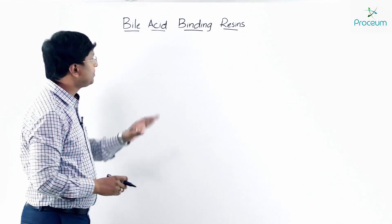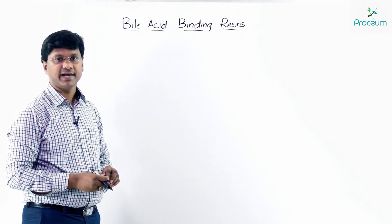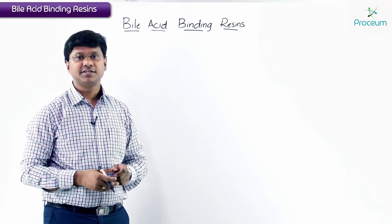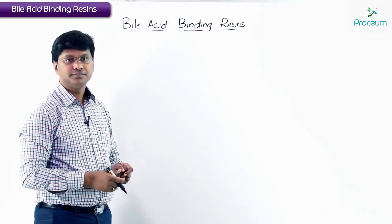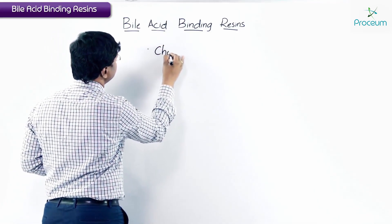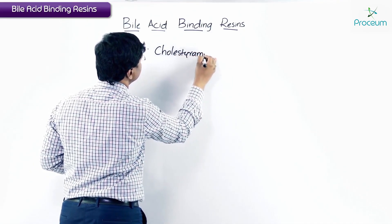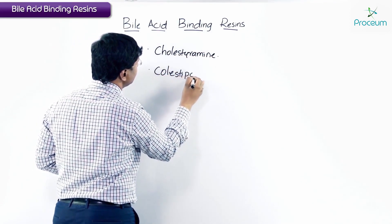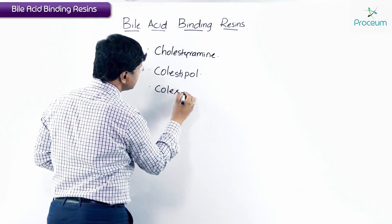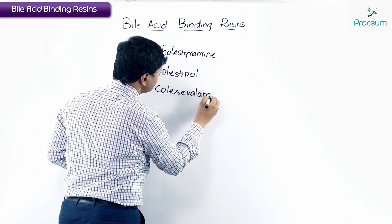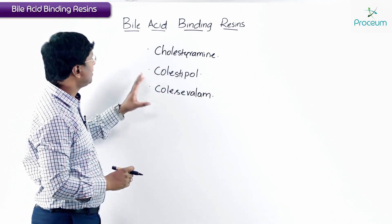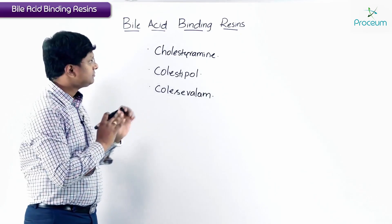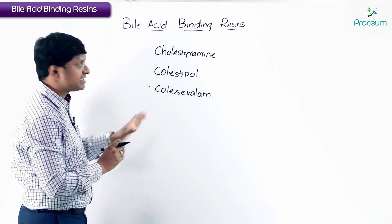The next group of anti-hyperlipidemic drugs is the bile acid binding resins. The drugs in this group include cholestyramine, colestipol, and colesevelam. These are the three bile acid resins.